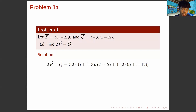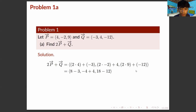For part A, we first compute 2 times vector P and add the resulting components to the corresponding components in vector Q. We have 2 times 4 plus (−3), 2 times (−2) plus 4, and 2 times 9 plus (−12). Simplifying: 8 minus 3, negative 4 plus 4, and 18 minus 12. Therefore, we get (5, 0, 6).